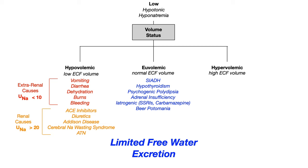In euvolemic hypotonic hyponatremia, we simply have limited free water excretion. The body is retaining a little more water than it should, technically still euvolemia with normal ECF volumes, but it can't excrete that free water as well. This results in hyponatremia and hypotonia while remaining euvolemic. The biggest cause here by far is SIADH — if you see SIADH, it's euvolemia.